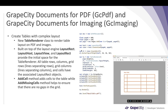Starting with new features added in GC PDF and GC Imaging, we have added the new Table Renderer class to render table layouts on PDFs and images. This class is built on top of a new layout engine called LayoutRect. LayoutRect helps to draw elements without knowing the position of the parent element or the other elements.